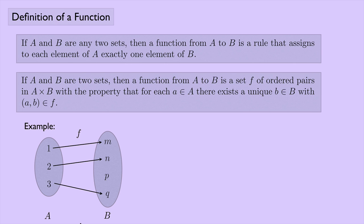The second definition says that we think of a function as a set of ordered pairs. Here that would be the set {(1, M), (2, N), (3, Q)}, which is the same as the function pictured. In practice, you can use either definition, and it may make more sense to use one over the other depending on the circumstances and context, but they should both make sense.